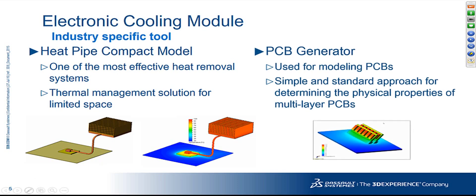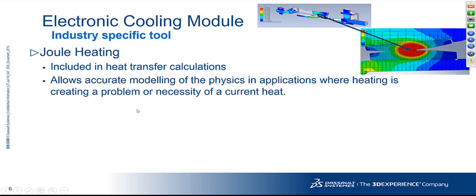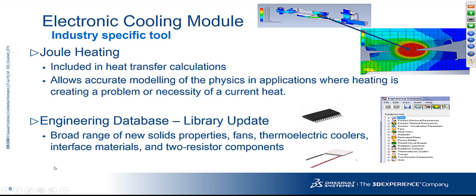There are also PCB generators. For PCBs with multiple layers, you can specify the number of layers, the amount of aluminum or copper inside, and simulate the heat generated. Finally, an important feature is Joule heating: whenever current flows through a conductor it creates heat, and we can simulate how much heat is created and where. Sometimes this heat is intentional, but most of the time it is a problem to be dissipated. All these come through an engineering database where you can drag and drop them directly into the software.